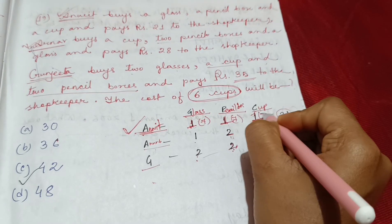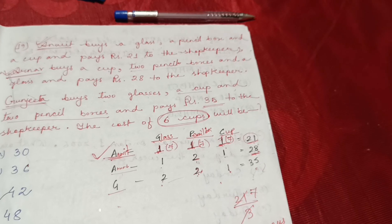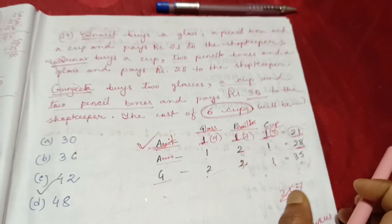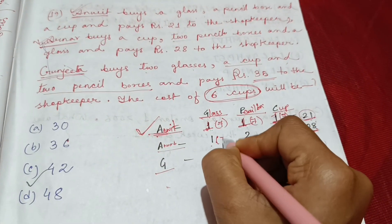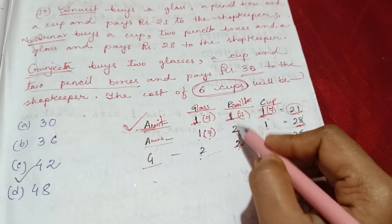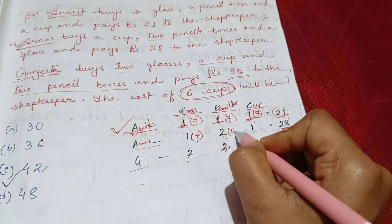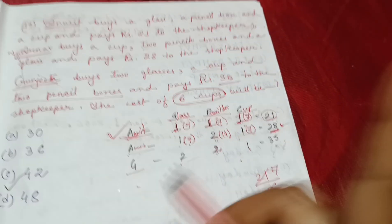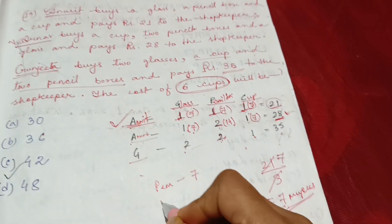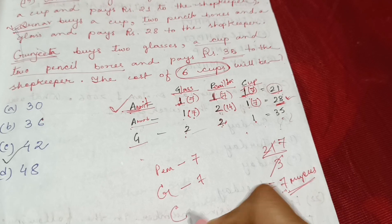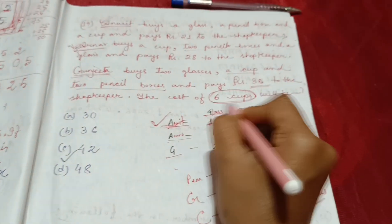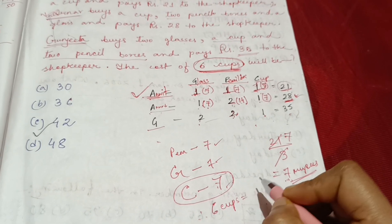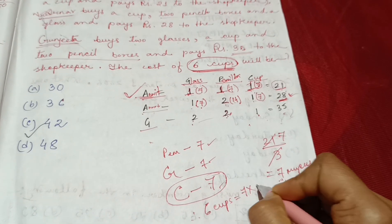তামনে প্রতেক বস্তু কিমান? Seven rupees. Glass এটোকো, cup নবযা — Unwit কিনিছে। So glass and cup and cup — the total is 6 cups. The price of 6 cups will be 7 into 6.